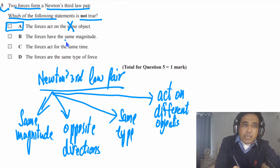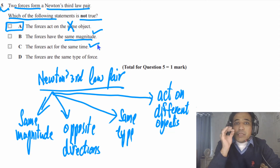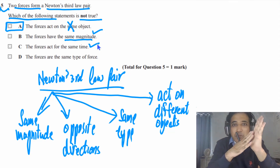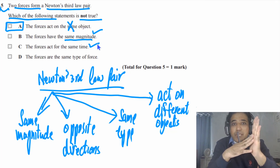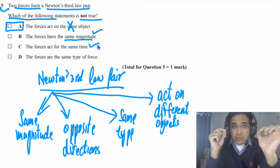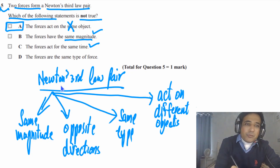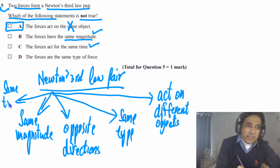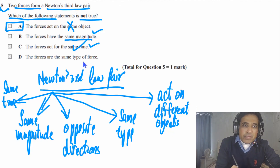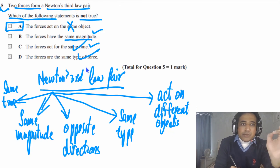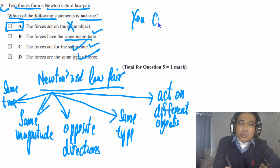The other statements are true: same magnitude is true; the forces act for the same time — yes, because you cannot touch something without being touched for the same duration, for example touching my left hand for one second means my left hand also touches my right hand for one second; and same type is also true. So the answer is A. Remember: you cannot touch without being touched.